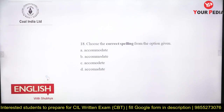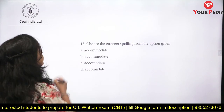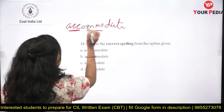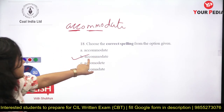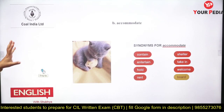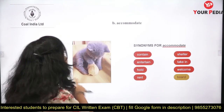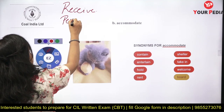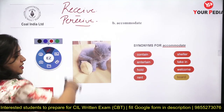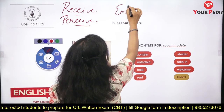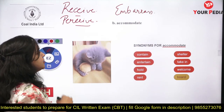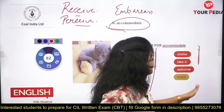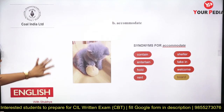Question eighteen asks for the correct spelling of accommodate. Remember: double C and double M — A-C-C-O-M-M-O-D-A-T-E. The correct answer is option B. Also remember: receive is R-E-C-E-I-V-E; perceive is P-E-R-C-E-I-V-E; embarrass is E-M-B-A-R-R-A-S-S. Synonyms of accommodate include: contain, entertain, hold, rent, shelter, welcome, and host.